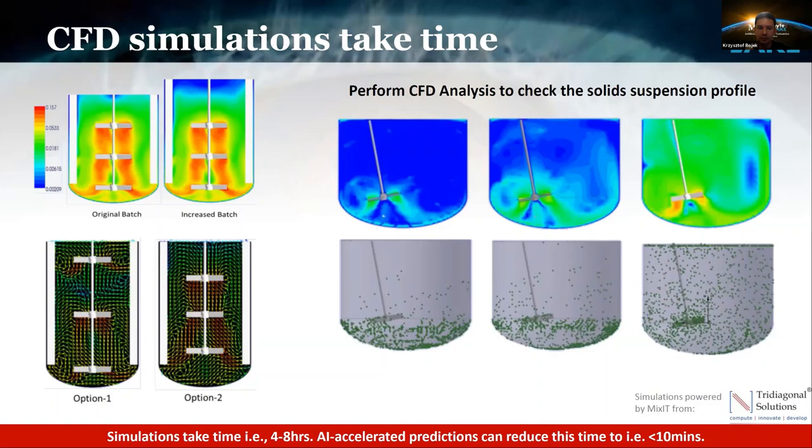Such parameters include the number of impellers, liquid level, angle of your impeller. Sometimes you need to use baffles in your tanks, sometimes you need to use a different shape of tanks. Everything like this can be simulated with Mixit.